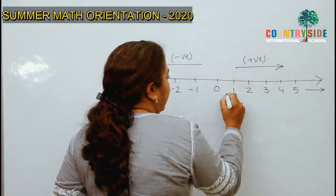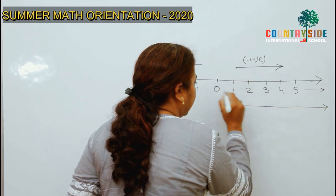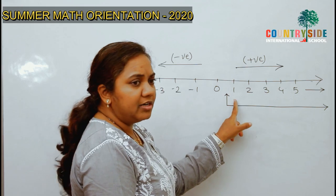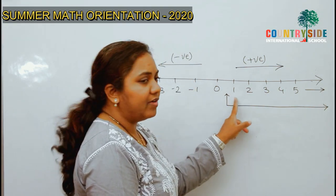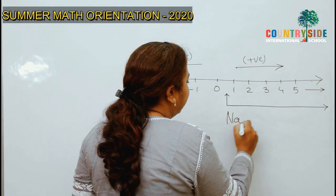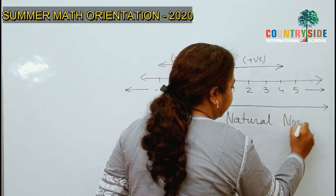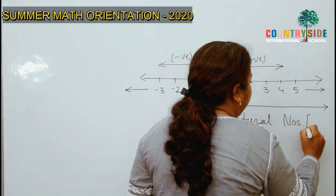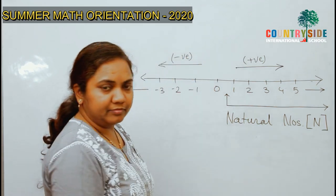So, if I take all positive numbers from 1 to infinite, positive numbers from 1 to infinite, they are called natural numbers. They are called natural numbers and they are denoted by capital N. Fine?